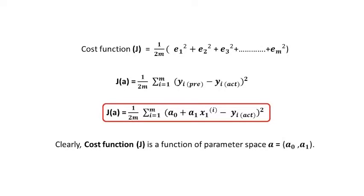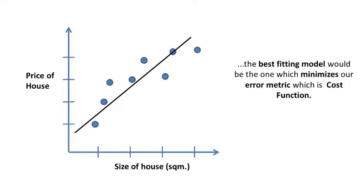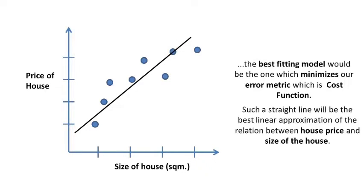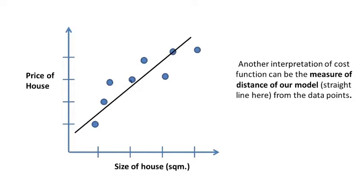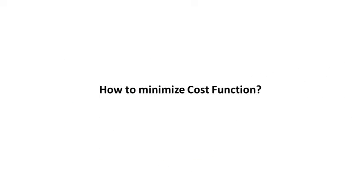Clearly, cost function J is a function of parameter space a naught and a1. I think you would have guessed it by now: the best fitting model would be the one which minimizes our error metric, which is cost function. Such a straight line will be the best linear approximation of the linear relationship between house price and size of the house. Another interpretation of cost function can be the measure of distance of our model from data points. Lesser the distance, better is our model. Now we just need to minimize cost function, but how to do that?